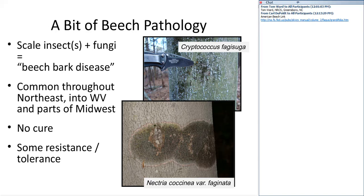The disease is known as beech bark disease or beech bark decline. It's a combination of an insect and a fungus, and both are thought to have been introduced into Nova Scotia in the late 1890s. It was found in the United States in the 1920s and spread from the northeast — Maine — southwest across the New England states and the northern and mid-Atlantic states. In the 1980s when I was in forestry school in Indiana, there was no evidence of this disease, so it has been spreading south and west.